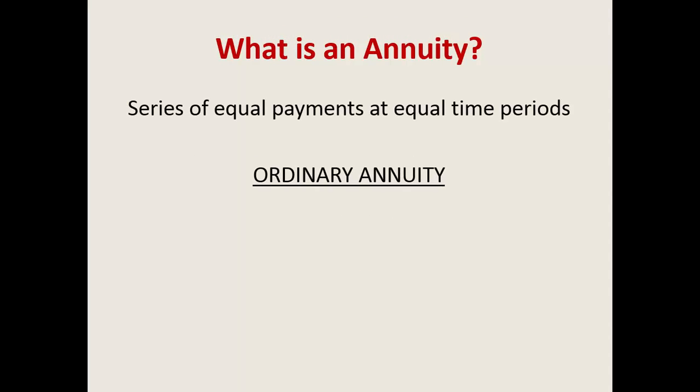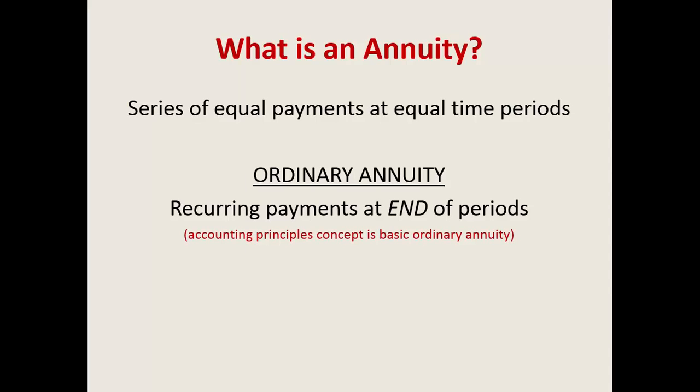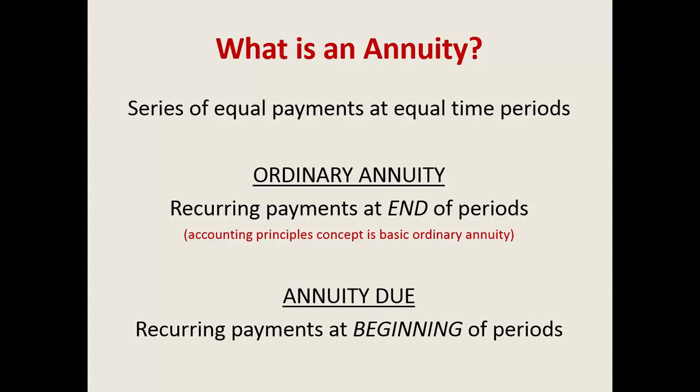So what exactly is an annuity? It's going to be a series of equal payments at equal time periods. An ordinary annuity, introduced in accounting principles, has recurring payments at the end of the period, because you're focusing on learning the basics of bond financing and how to record that on your balance sheet. With an annuity due, this is recurring payments at the beginning of the period, taught at a later level in intermediate accounting and business finance classes. When would you use an annuity due? Mostly with capital leases, because when you rent, you usually have to make your first month's rent payment the first of the month.